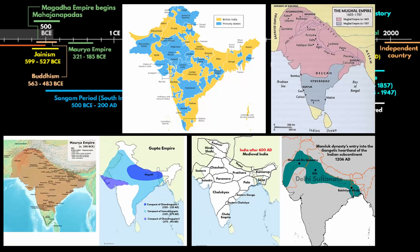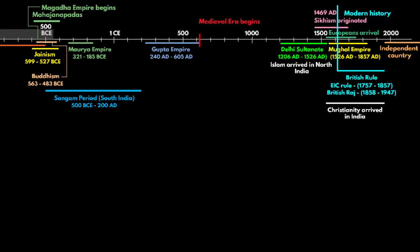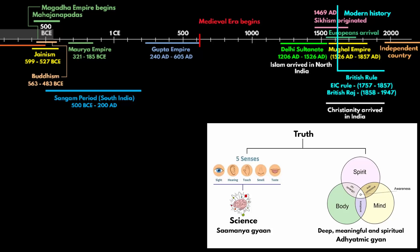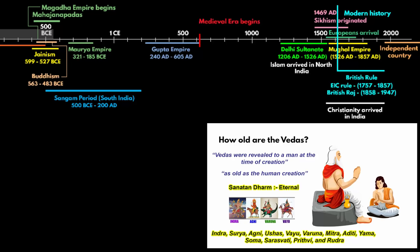If you look at all four maps together, you will notice a transformation in terms of various empires and rulers that ruled the Indian subcontinent, and how different religions entered it. Now I will tell you how Hinduism evolved. In the Vedic period, Vedas have everything you need to build up your life and invoke your subtle psychological and spiritual state of mind. Some of the prominent deities mentioned in the Vedas are Indra, Surya, Agni, Usha, Vayu, Varuna, Mitra, Aditi, Yam, Soma, Saraswati, Prithvi, and Rudra. But today, in modern Hinduism, most Hindus are devotees of Shiva and Vishnu.